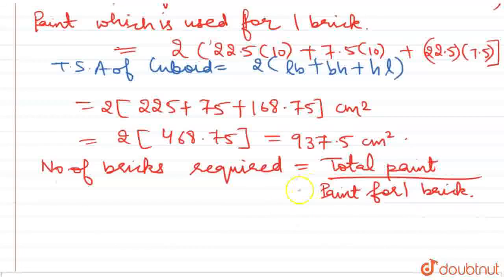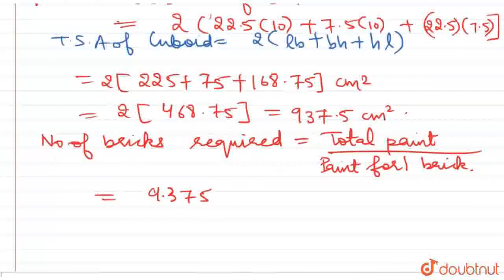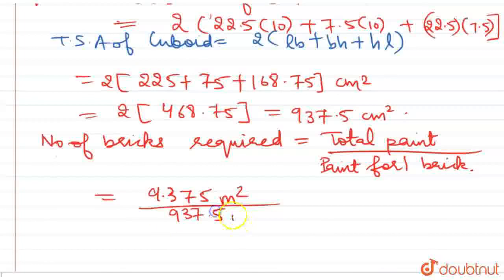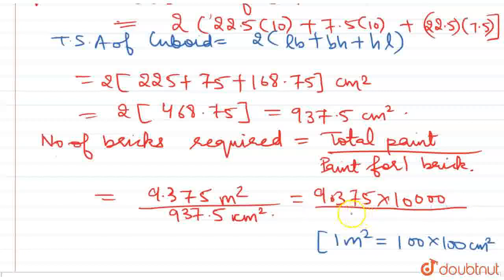So we can write 9.375 meter square upon 937.5 centimeter square. Now we know that 1 meter square is equal to 100 into 100 centimeter square. It is 9.375 into 10,000 upon 937.5.